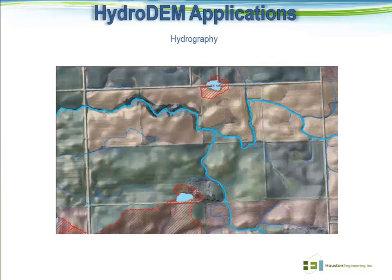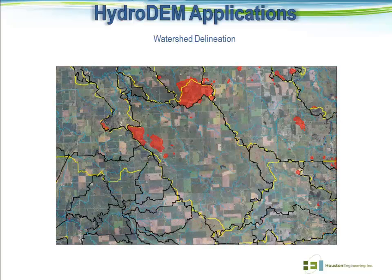In terms of applications, once we've developed the hydro-DEM, there really are a numerous amount of applications. This particular graphic shows probably the most obvious use of the hydro-DEM: developing your watershed hydrography or determining what your flow paths actually look like — things like where the non-contributing areas are in relation to defined channels, how that relates to the contributing watershed along those defined channels, and your basic H&H applications — deriving subbasins and things of that nature. You can also see here a graphic of a watershed delineation with non-contributing areas.